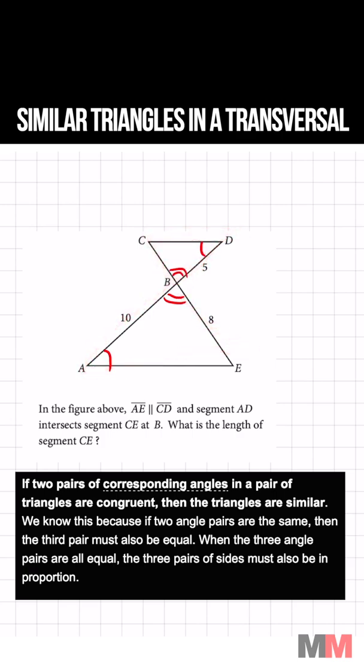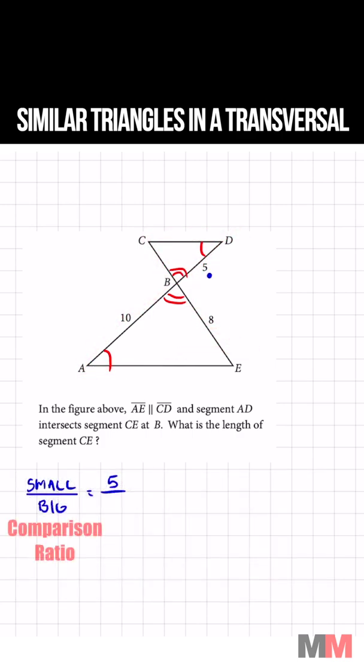In the small triangle if I put 5 above that corresponds with the length that's 10. Let's call CB X and X is going to correspond with 8.